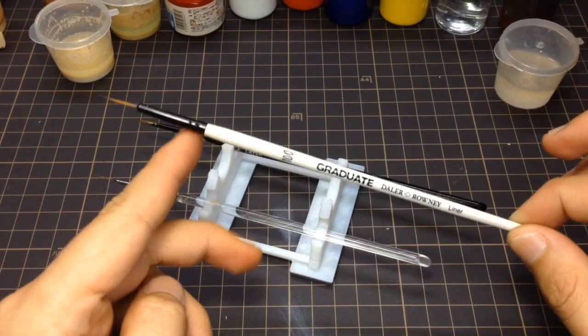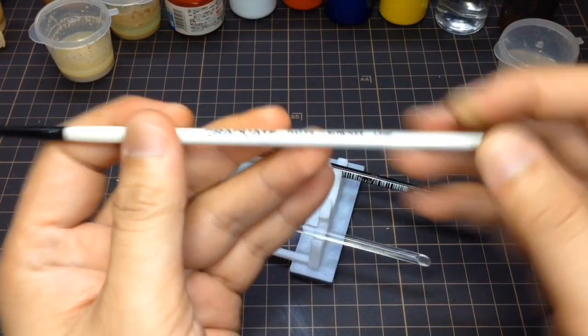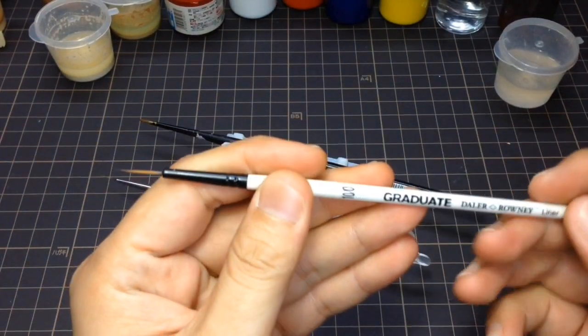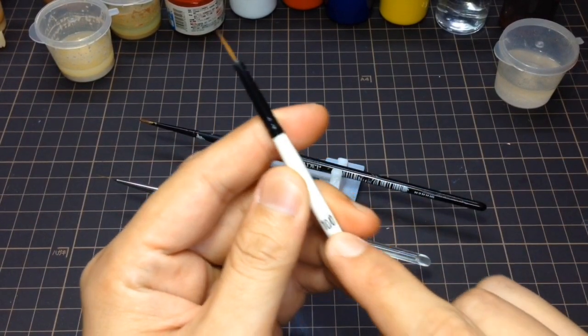And then the second paintbrush is from Daler Rowney. It is a liner type paintbrush size 10-0.